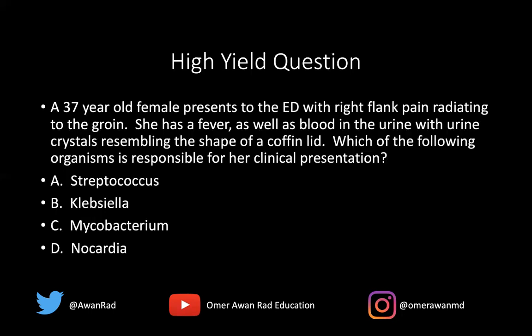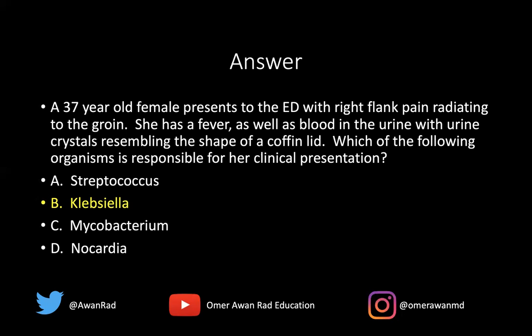Returning to the high yield question: a 37-year-old female with right flank pain radiating to the groin, fever, blood in the urine, and urine crystals shaped like a coffin lid. She has a kidney stone — the coffin lid shape indicates a struvite stone, composed of ammonium magnesium phosphate, typically caused by Klebsiella, Proteus, Pseudomonas, or Staph. The answer is B — Klebsiella. Hope this was helpful; tune in next week for another high yield USMLE Domination tutorial.